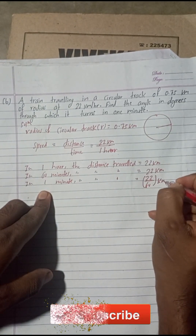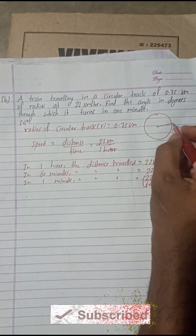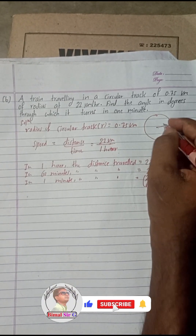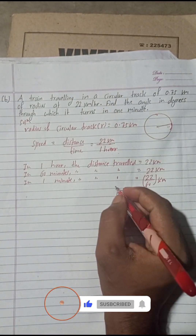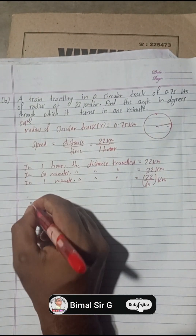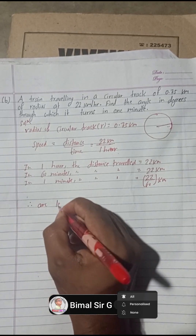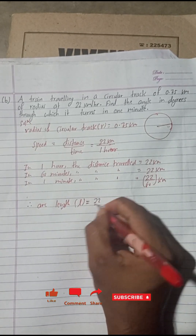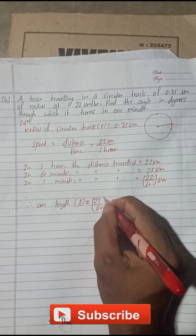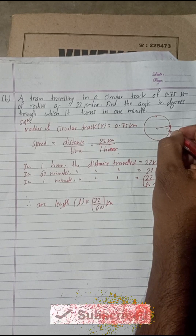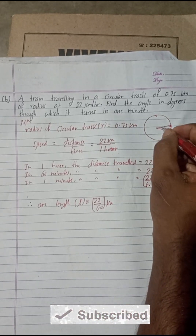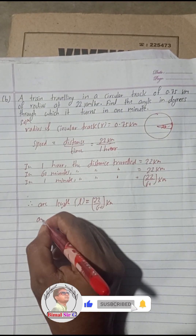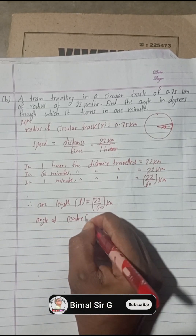In one minute, the train travels 22/60 kilometers. This distance is our arc length. Therefore, the arc length is equal to 22/60 kilometers. If we join this arc at the center, we get angle theta — and this theta is what we have to find. Angle at the center: theta is equal to l over r.